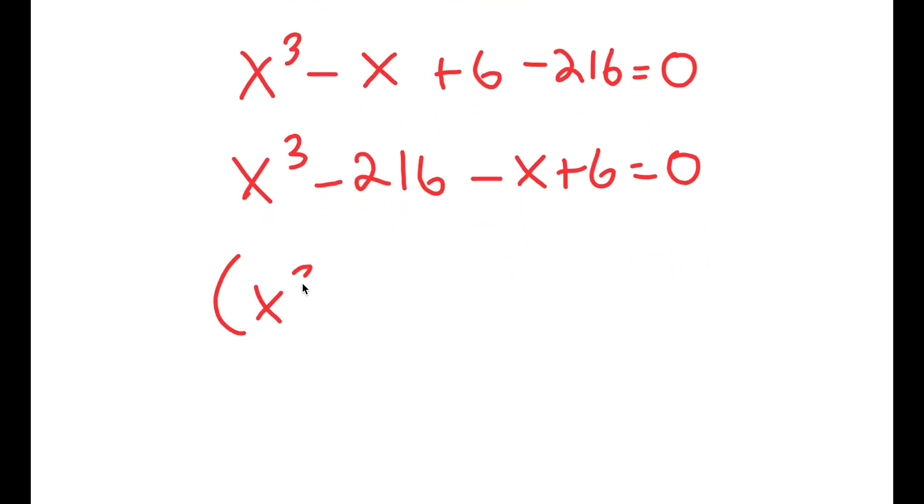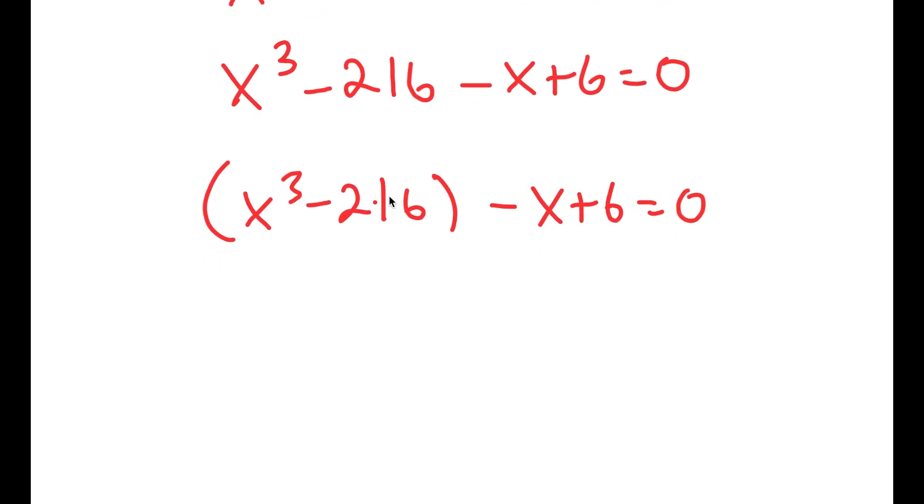And I'm going to group x to the power of 3 minus 216 together. Now, 216 is the same thing as 6 to the power of 3. So I get x to the power of 3 minus 6 to the power of 3 minus x plus 6 is equal to 0.